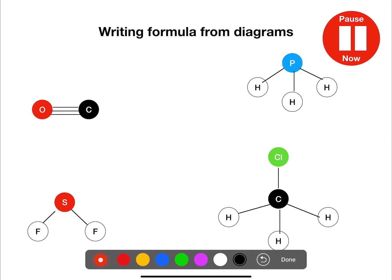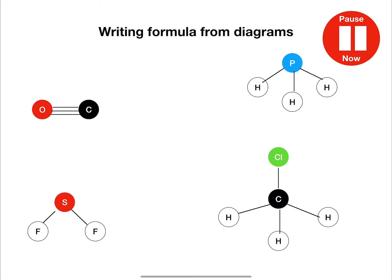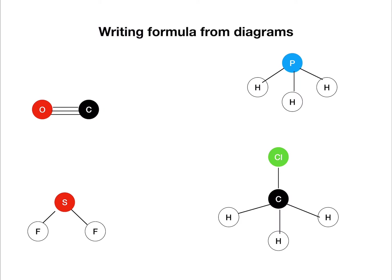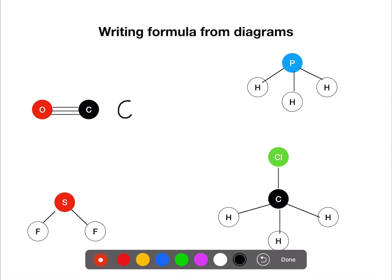Here are four more examples for you to try. Pause the video now. In the first example we have carbon monoxide — one carbon and one oxygen — so we don't require any numbers in the formula.